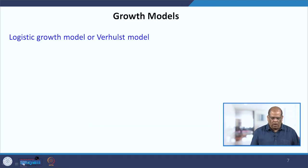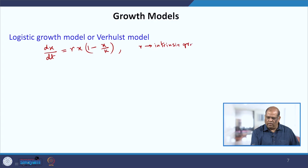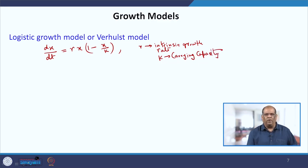In the logistic growth model, we have the equation dx/dt = r·x·(1 − x/k), where r is called the intrinsic growth rate and k is called the carrying capacity. The word intrinsic is used because this contains birth rate minus the death rate — both are contained in r.